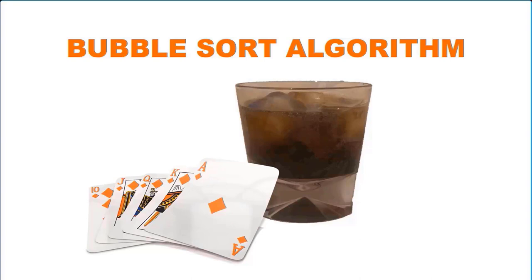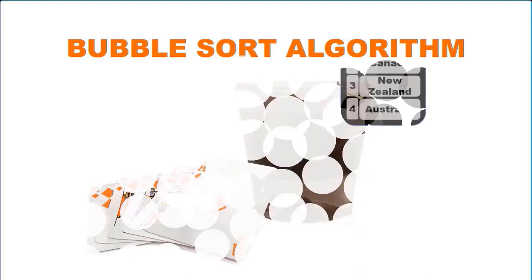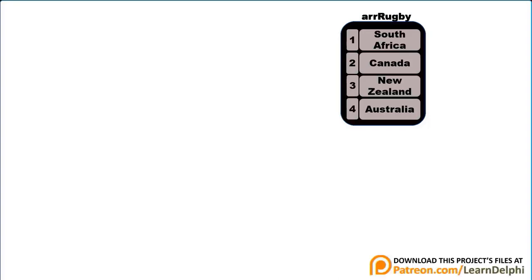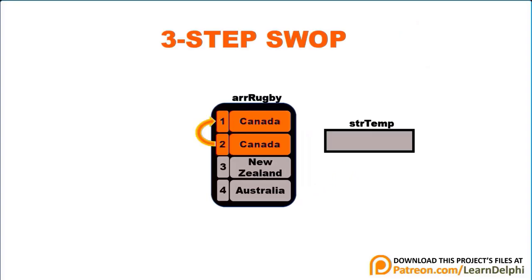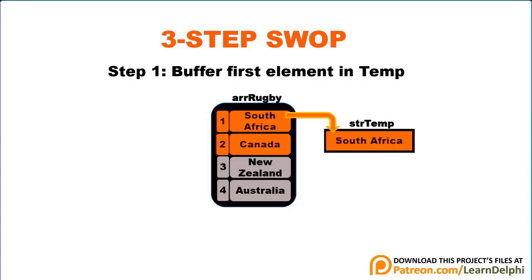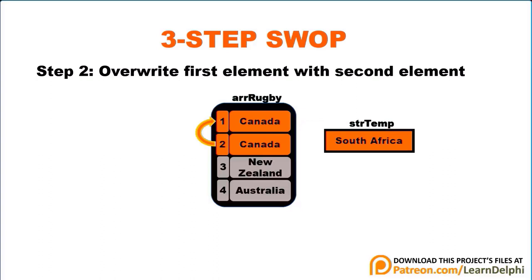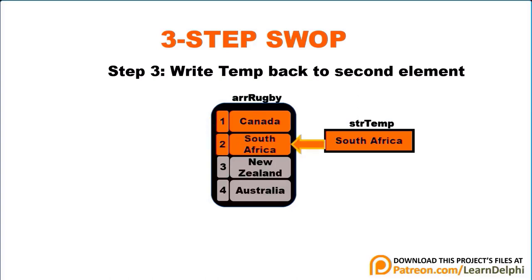I will explain the bubble sort algorithm while you wait for downloads to finish. Let's assume our array stores the names of rugby nations that participated in the 2019 Rugby World Cup. To perform a bubble sort, your code must loop through the array while keeping track of a few values. You must have a temporary variable to help you swap two elements of the array. If you attempt to swap two values directly, you will overwrite the first value and it will be lost. The temporary variable prevents that — if you first assign the first value to temp, it is buffered and can be remembered later. Now you can overwrite the first value with the second one, and the first value is not lost because it was saved in temp.